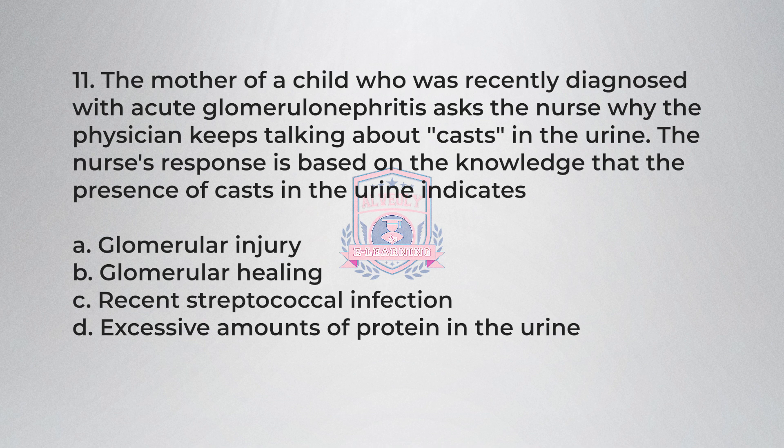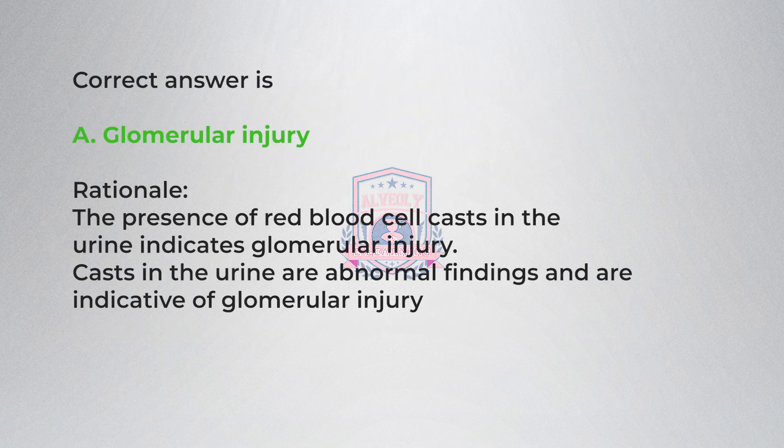Question 11: The mother of a child recently diagnosed with acute glomerulonephritis asks the nurse why the physician keeps talking about casts in the urine. The nurse's response is based on the knowledge that the presence of casts in the urine indicates: A) Glomerular injury, B) Glomerular healing, C) Recent streptococcal infection, D) Excessive amounts of protein in the urine. Correct answer is A, glomerular injury. Rationale: The presence of red blood cell casts in the urine indicates glomerular injury.